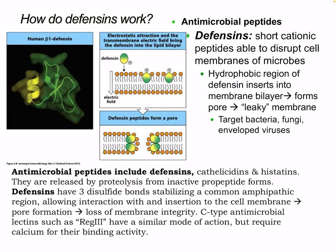Defensins are another example of an antimicrobial peptide. Here we can see human beta-1 defensin in an electron micrograph. Defensins are short cationic peptides that are able to disrupt cell membranes of microbes. The hydrophobic region of a defensin inserts into the membrane bilayer and forms a pore, causing a leaky membrane. This targets bacteria, fungi, and enveloped viruses.